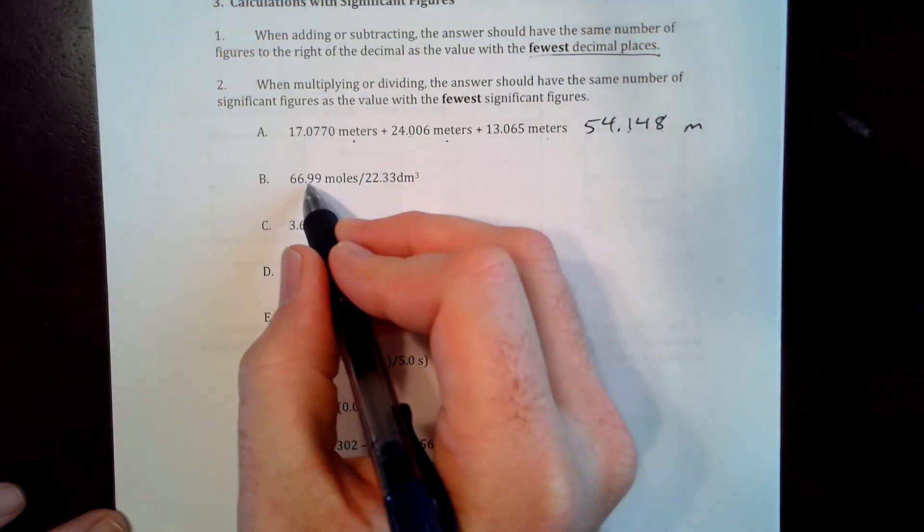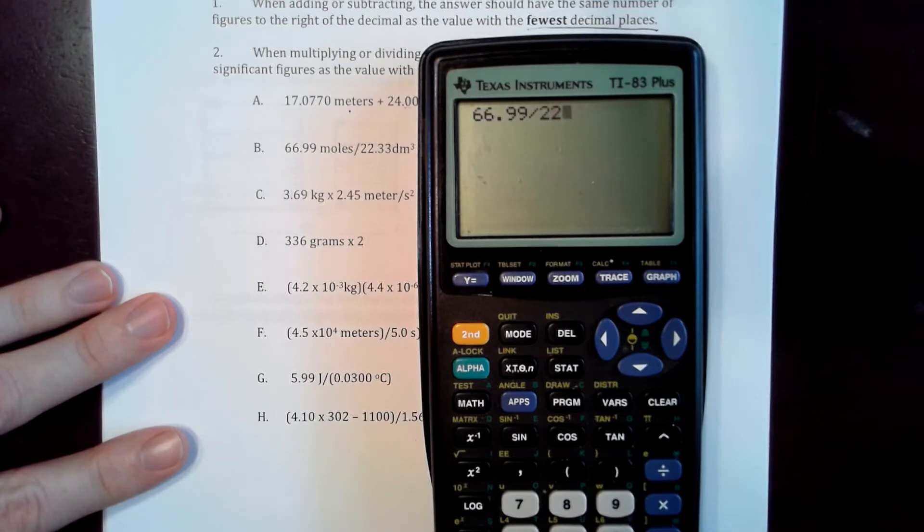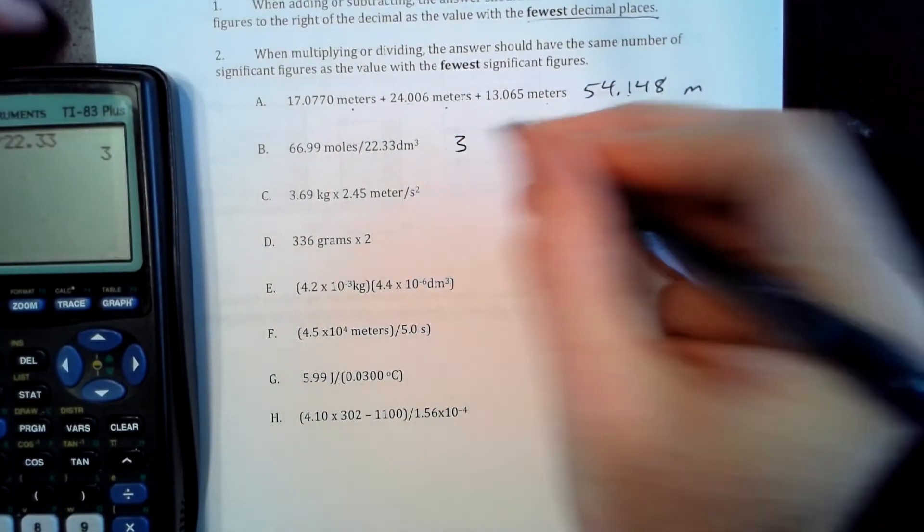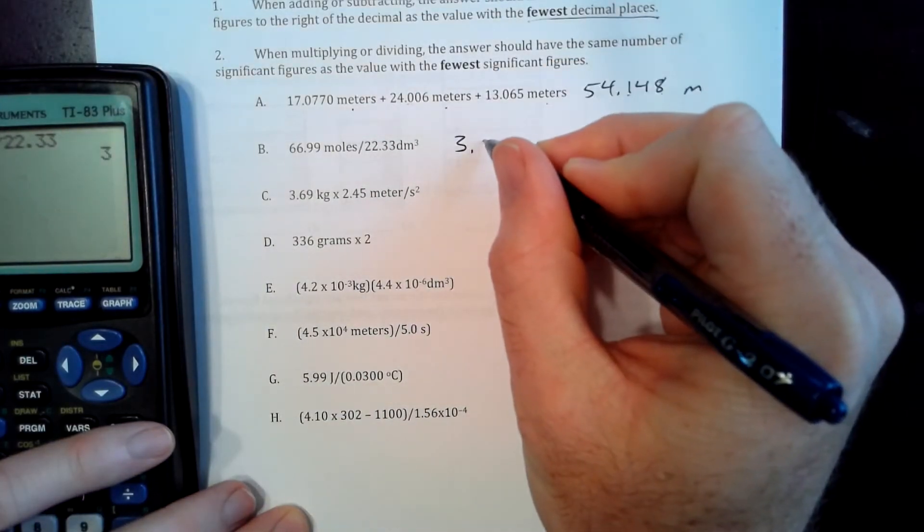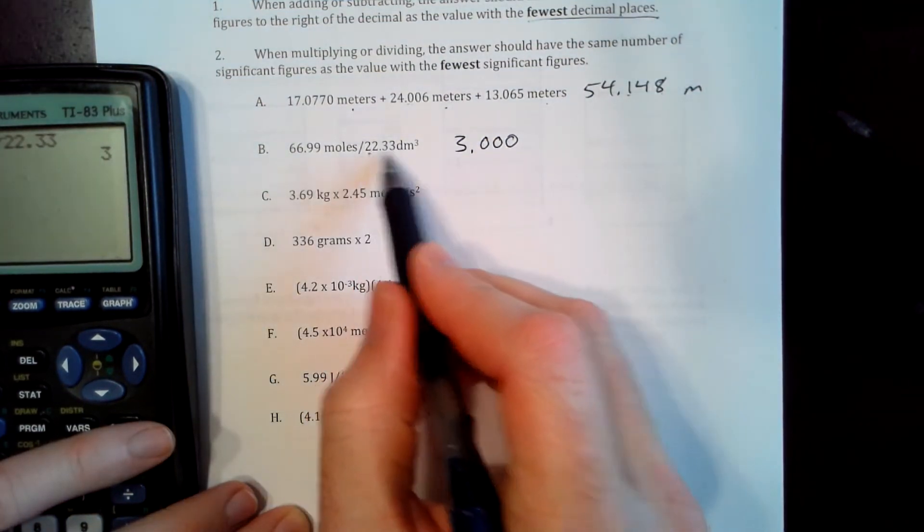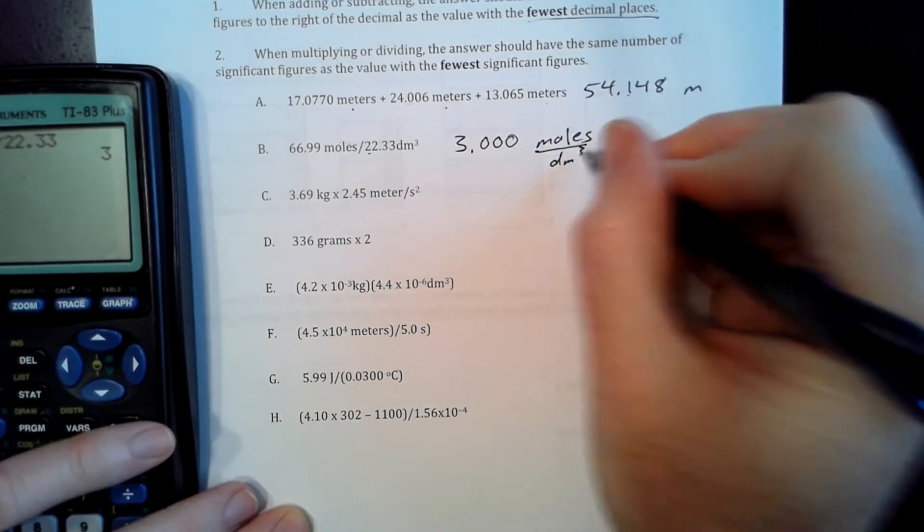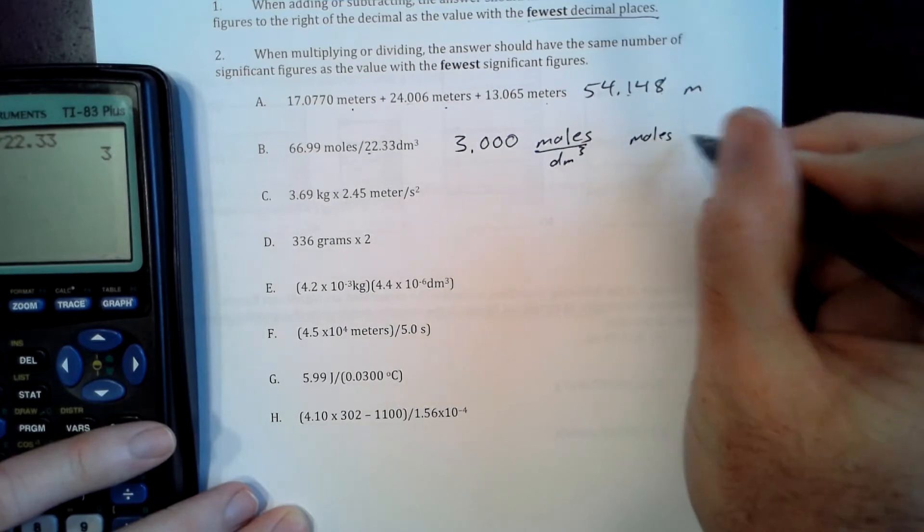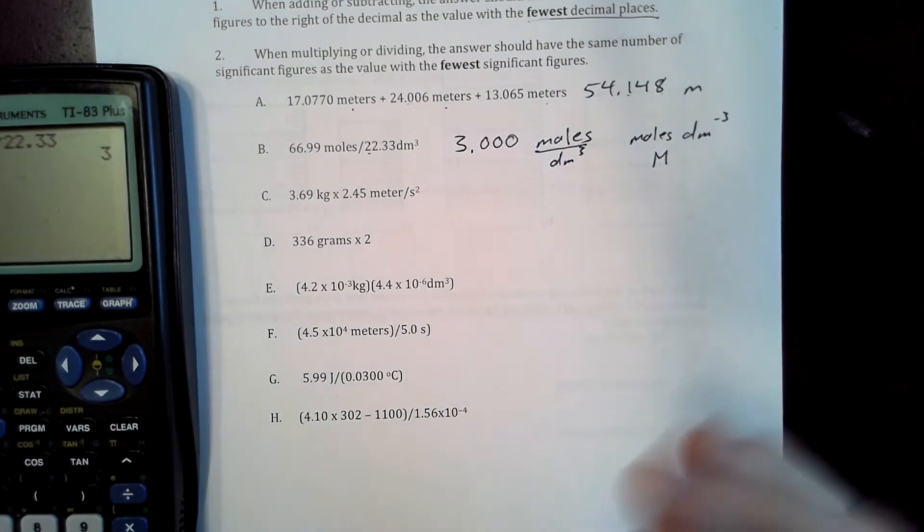Now, if we do 66.99 divided by 22.33, we get 3. Well, people will put 3 and call it a day. That's going to be minus 1 point. So you're going to end up getting, you should do 3.000. That makes sure that you keep all your sig figs. So that's going to be moles per decimeter cubed, also known as moles per liter, or you can write it as moles per decimeter cubed, or you can write it as molarity. Those are different units that come up.